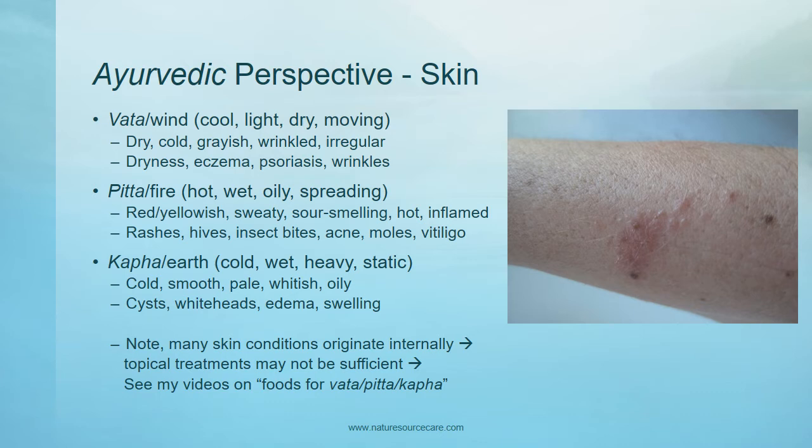Now let's talk about the Ayurvedic perspective on skin. We can apply the idea of vata, pitta, and kapha — wind, fire, and earth — to skin types and skin conditions. For people who are mostly vata or windy types, their skin is going to be cool, light, dry, and moving. They're going to have dry skin that's cold, usually with a grayish tinge, and it tends to be wrinkled because it's so dry. There can also be irregularities with the skin because the wind is not constant. Specific vata-type skin conditions include dryness, eczema, psoriasis with a lot of dryness, and wrinkles.